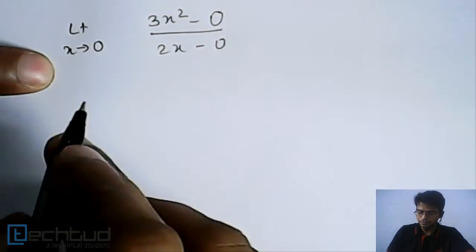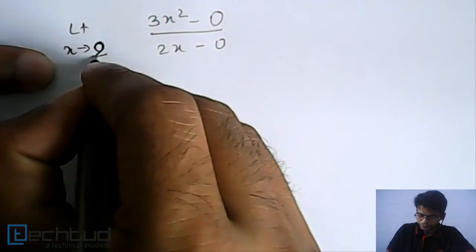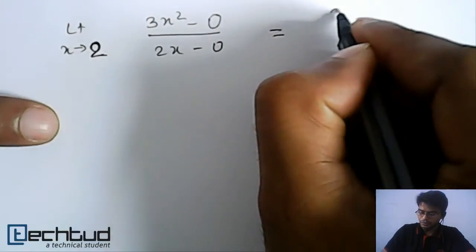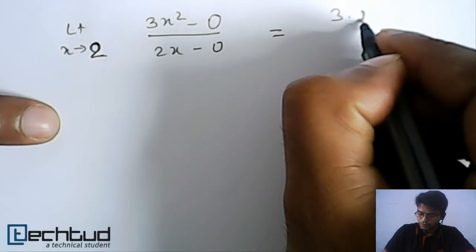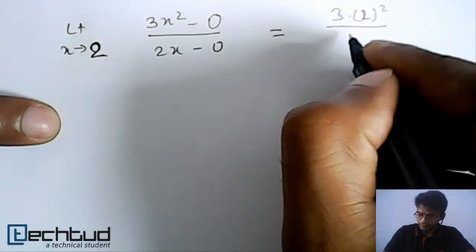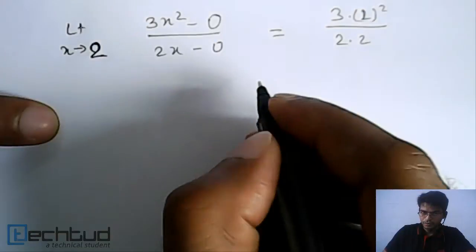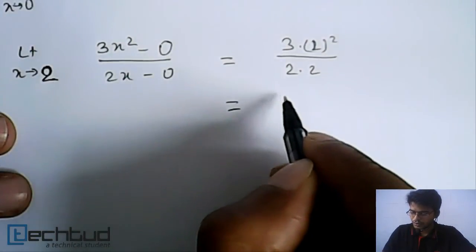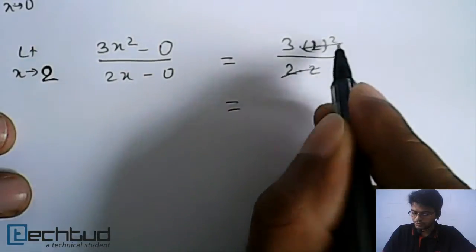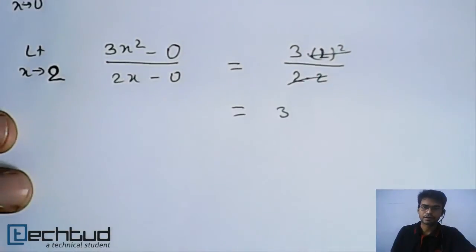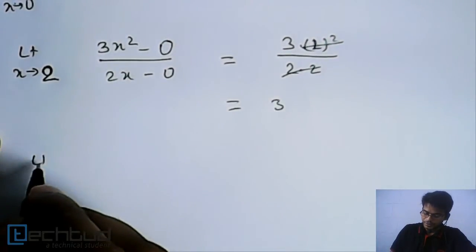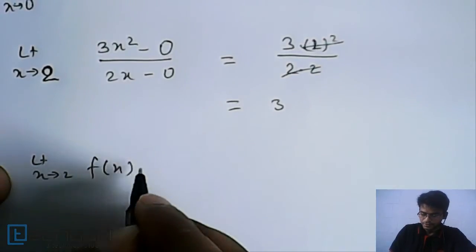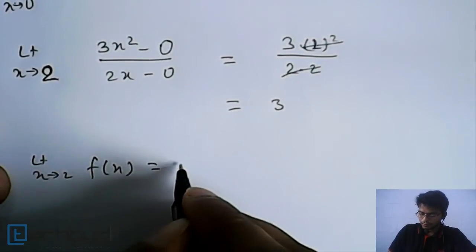Now we can put the value of x = 2, which gives us 3 × (2²) / (2 × 2) = 3 × 4 / 4 = 3. So the limit as x tends to 2 of f(x) is equal to 3.